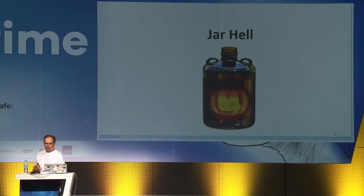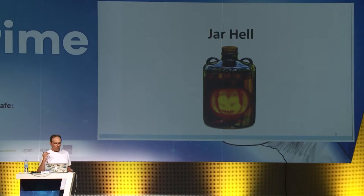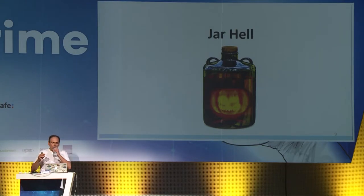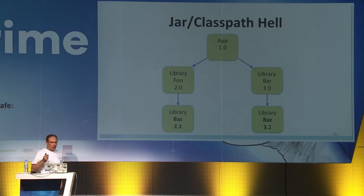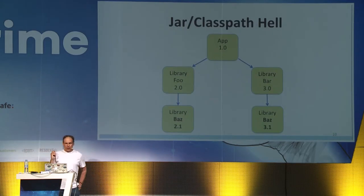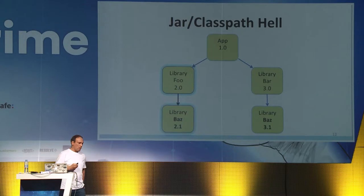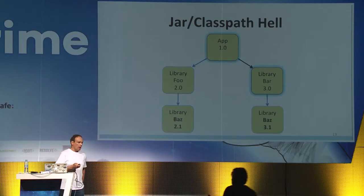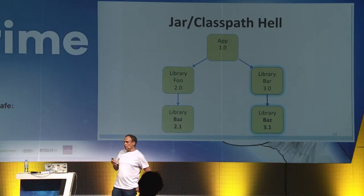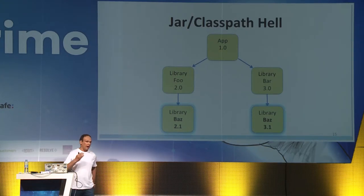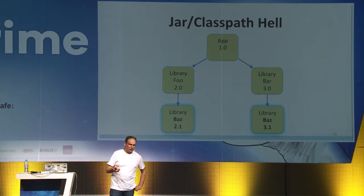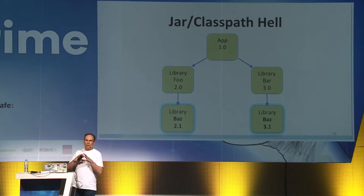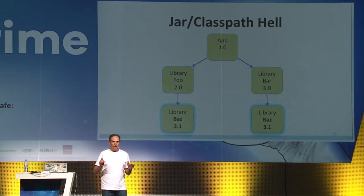Even with this basic information we can now pose our problem: the jar hell problem. It is most easily illustrated by the following example. Suppose your app depends on library foo, which depends on library buzz at some version. At the same time your app depends on library bar, which also depends on library buzz at a different version. If you put both versions on the class path, it becomes unclear what version will be loaded at runtime, and most probably one version will partially overwrite another, leading to unpredictable program behavior.